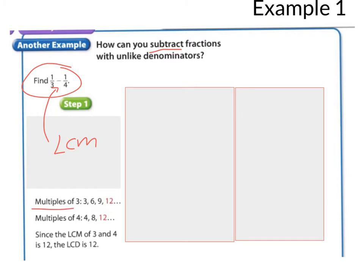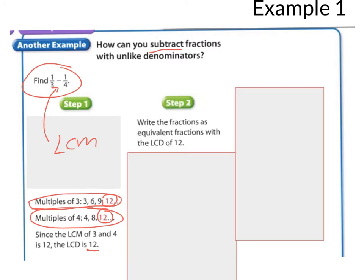So, we're making these lists of the multiples of three and the multiples of four. As we make these multiples, the first one that is like or the least common multiple is 12. So, we're going to make the denominator 12. And I want you to think for a second, what do you predict we're going to multiply one-third by so that 12 is the denominator?